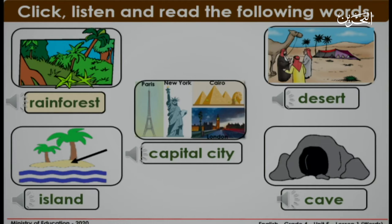Rainforest. Desert. Island. Capital City. Cave.